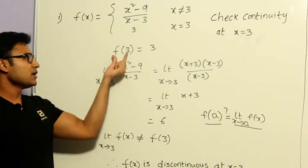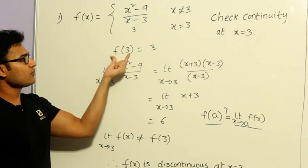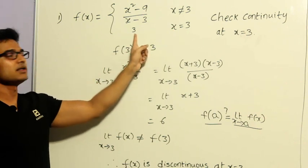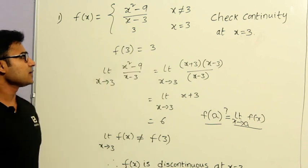Now, f of A is nothing but in this case f of 3, because that is the point we are looking at, and f of 3 is already given as 3. So from this, when x equals 3, this value is 3. So I have written it as 3.